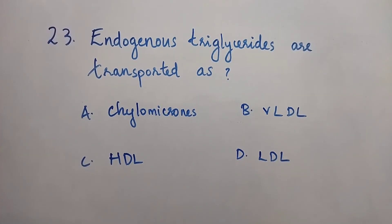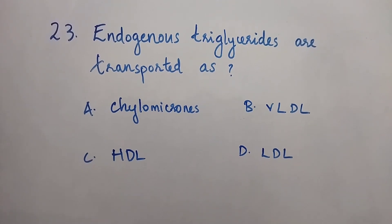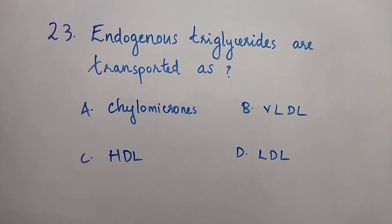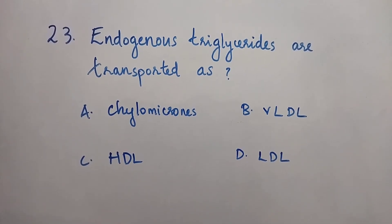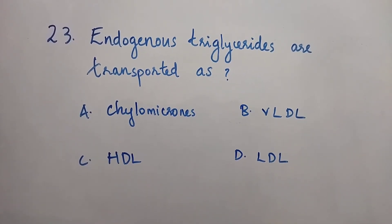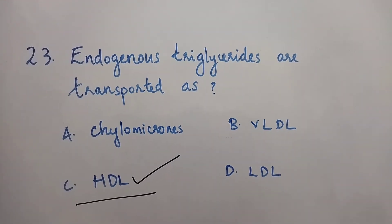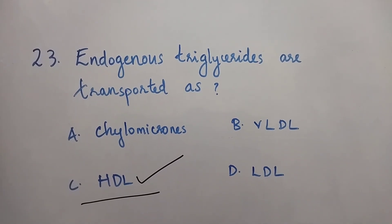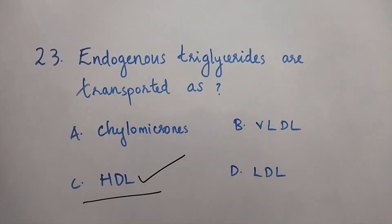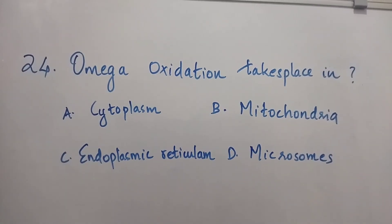Question number 23: Endogenous triglycerides are transported as — Option A: Chylomicrons. Option B: VLDL. Option C: HDL. Option D: LDL. The right answer is Option B, VLDL. Endogenous triglycerides are transported as VLDL (very low density lipoprotein).